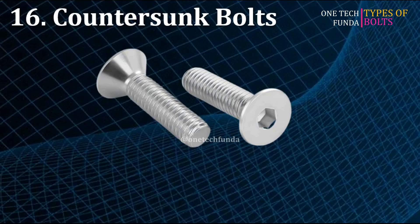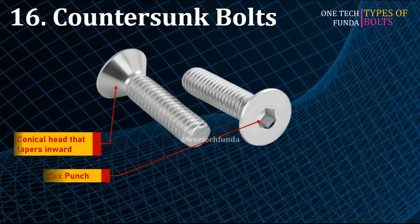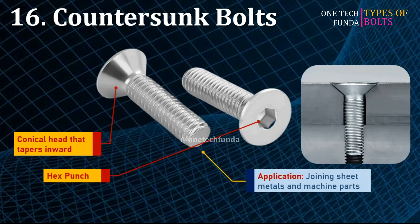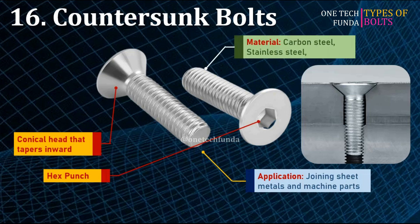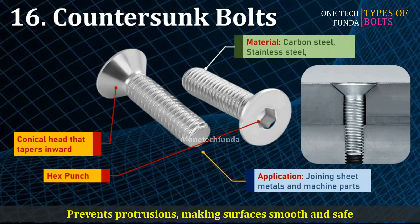Countersunk bolts feature a conical head that tapers inward with a hex punch in the center. Ideal for applications joining sheet metals and machine parts. Materials include carbon steel and stainless steel. The main advantage is they prevent protrusions, making surfaces smooth and safe.